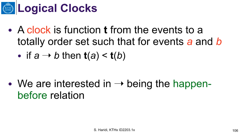A clock is a function t from the events in the system to a totally ordered set — for example, the set of all positive integers — such that if event A happens before event B, whether in real time or because of causality, then the clock increases, meaning the value of the clock at event A is strictly less than the value of the clock at event B. We are interested in this relation being the happens-before relation, i.e., the causally-before relation.